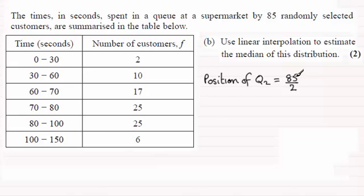So the position of the median is half of the 85 values, which turns out to be equal to the 42.5th value. And what I like to do is work through here to find out which class interval that 42.5th value is going to be in.